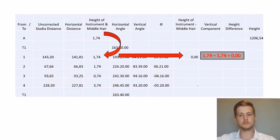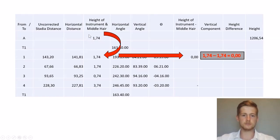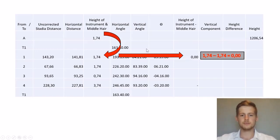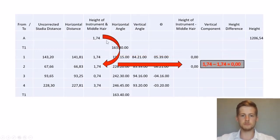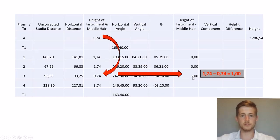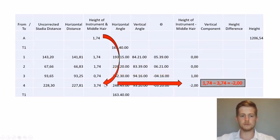Then we'll go to our height of instrument minus our middle hairs. Please note that our height of instrument is 1.74. So each time we're going to say 1.74 minus the middle hair reading and fill the answer into this column. You'll see the last point has a very high middle hair reading, which means we'll have a negative.